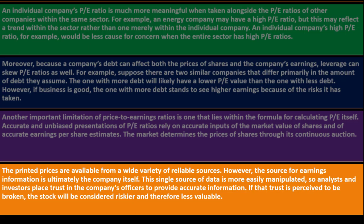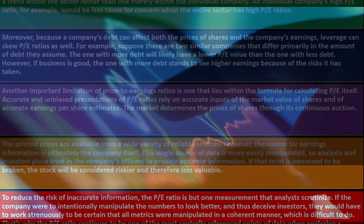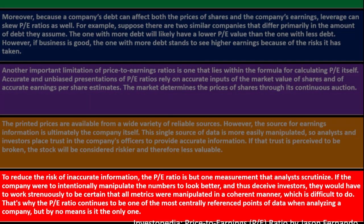Analysts and investors must place trust in companies to provide accurate information. If that trust is broken, the stock will be considered riskier and therefore less valuable. Being listed on an exchange and audited provides more confidence in the accuracy of reported figures. To reduce the risk of inaccurate information, the P/E ratio is but one measurement analysts scrutinize — if a company intentionally manipulated numbers, it would have to ensure all metrics were manipulated coherently, which is difficult. This is why P/E continues to be one of the most centrally referenced data points when analyzing a company.